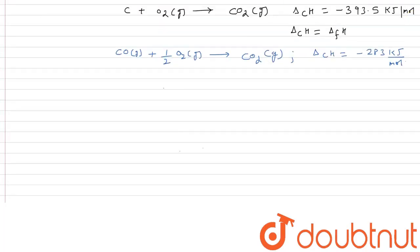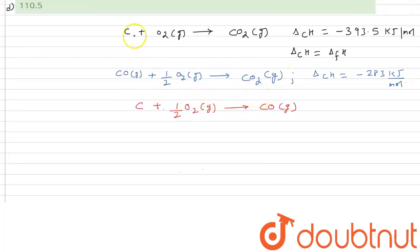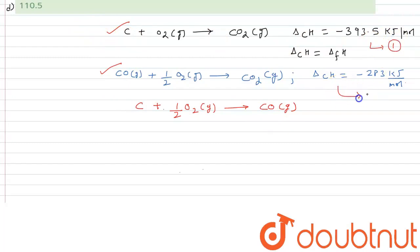We have to calculate the enthalpy of formation of carbon monoxide — that is, the enthalpy for the formation reaction — using the given data. We can see that we have Equation 1 (carbon combustion) and Equation 2 (CO combustion). If we subtract Equation 2 from Equation 1, we get the desired formation reaction.